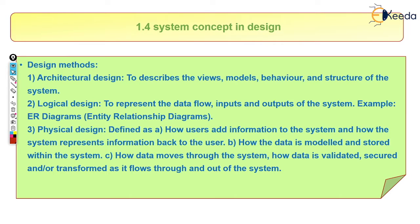The first type is architectural design, which describes the views, models, behavior, and structure of the system. The second is logical design, which represents data flow — input and output of the system — like entity relationship diagrams. The third is physical design, which considers how users add information to the system and how the system represents information back to the user — essentially a feedback system.